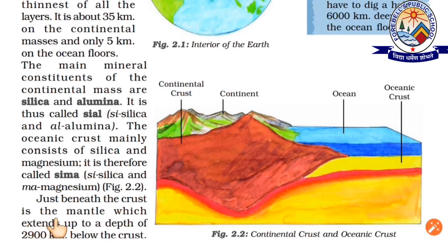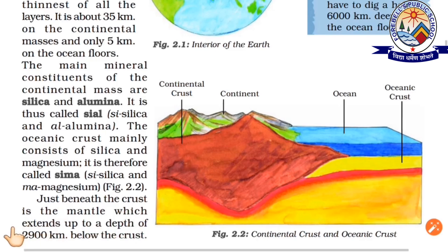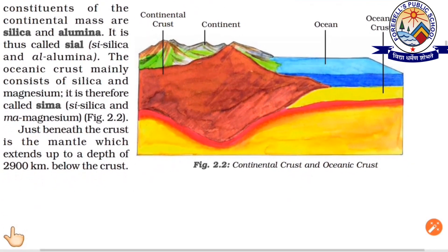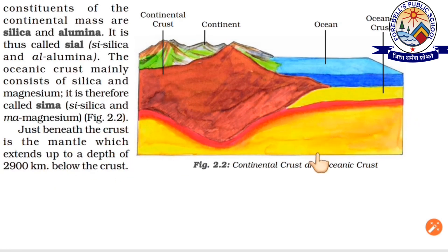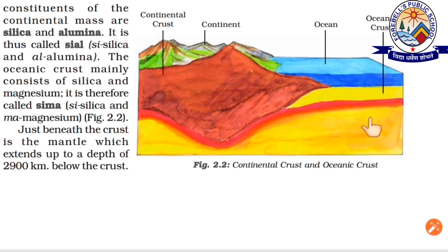Just beneath the crust is the mantle, which extends up to a depth of 2900 km below the crust. This is the crust, this is the ocean, and just below that layer is the mantle.